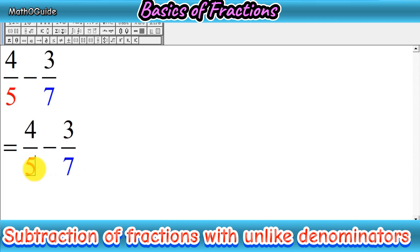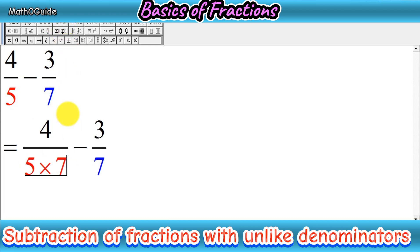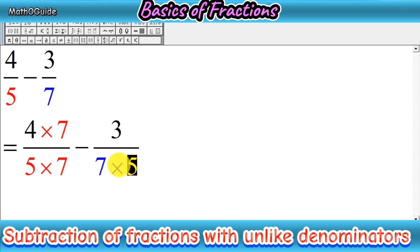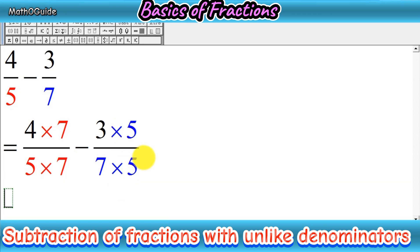Since both denominators are different and have no common factor, we have to multiply both denominators by some number. The method is very simple: multiply 5 by 7 and 7 by 5 — just exchange the numbers and multiply them. Since we multiplied the denominator of the first fraction by 7, we also multiply the numerator of the first fraction by 7. Similarly, since we multiply the denominator of the second fraction by 5, we multiply the numerator of the second fraction by 5.